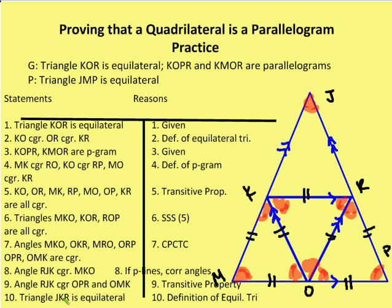Now I can say that triangle JKR is an equilateral triangle. By definition of equilateral triangle, all sides are congruent. But I'm also going to imply, as part of what I discussed up front, that by definition of an equilateral triangle — when I have the same angle measures in a triangle, I have an equilateral triangle as well.